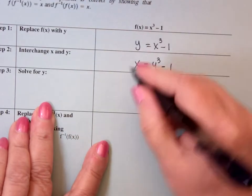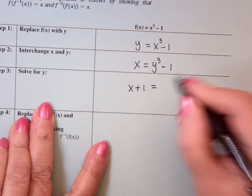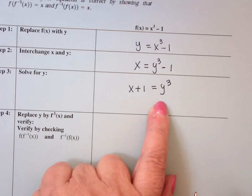Solve for y, that means I'm going to add 1 to both sides. And how do I solve for y now? Cube root.